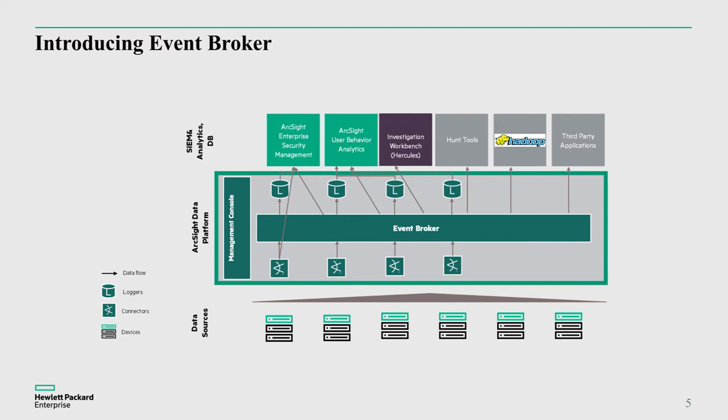We want to distribute that data into ArcSight components. ArcSight is not just one product now — it's a suite of components. That could be the UBA solution, ESM from a correlation point of view, our new investigation workbench, additional hunt tools, or third-party tools and applications. One example shown here is Hadoop — we can feed data out to it. The Event Broker is open standard, open source software, so it's an open architecture for you to plug in to. Because it's a message bus, there's no impact from having multiple systems consuming data from it. This becomes your enterprise security bus for distributing security log event information from those data sources.